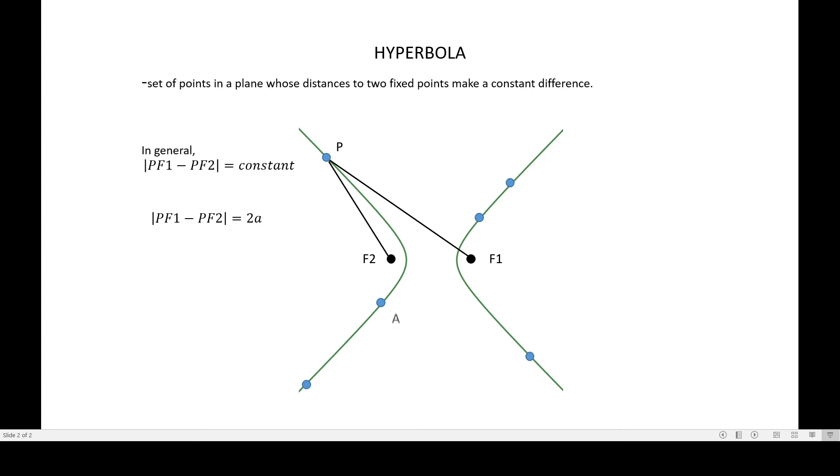As in this one, for example, if I have this point A down on the screen, it's a point in the hyperbola different from P. And obviously, it has a distance to F1 and a distance to F2. Now, if you will subtract the distances, expect that the difference will be 2a as well.